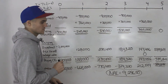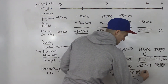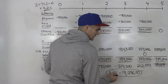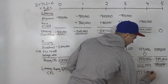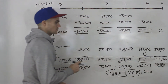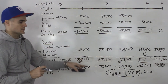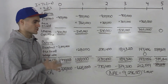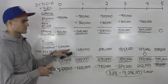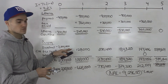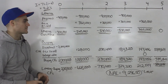Since the net advantage to leasing is positive at $9,296.50, we should lease the machine. With straight line depreciation we got a negative value and should buy; with CCA depreciation at 20%, we should lease.